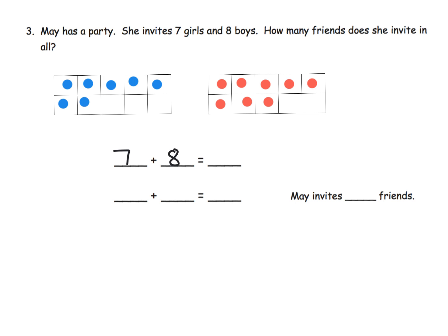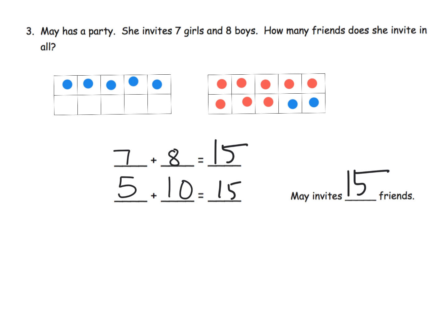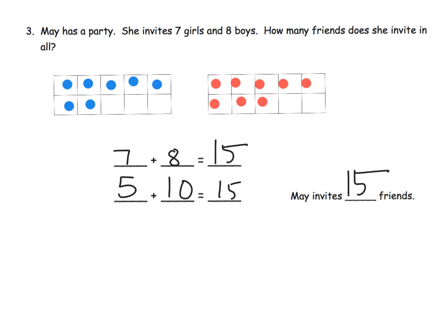We can record that as seven plus eight. What we want students to see is this eight is really close to ten, so all we have to do is take these two from the seven girls and put them over here into this 10 frame. We now have a new expression: five plus ten. And five plus ten — we know that that's 15. So that means seven plus eight is 15, and that means May invites 15 friends.